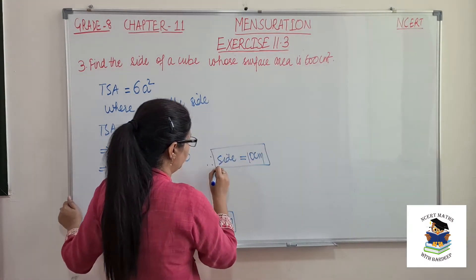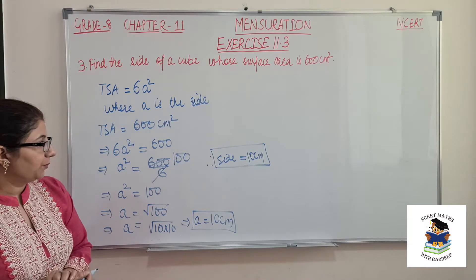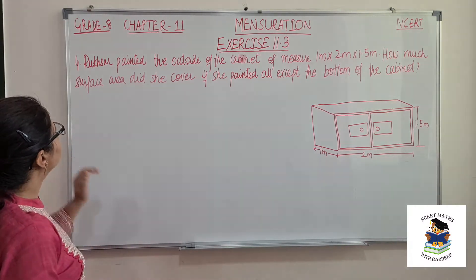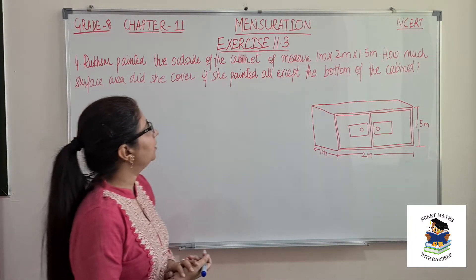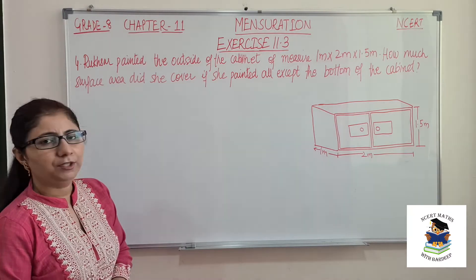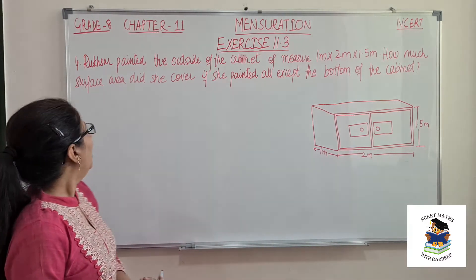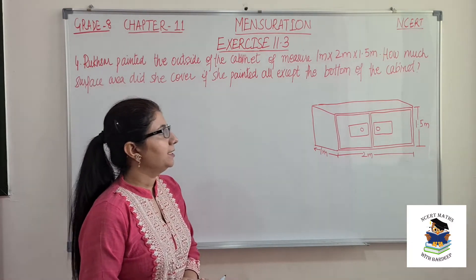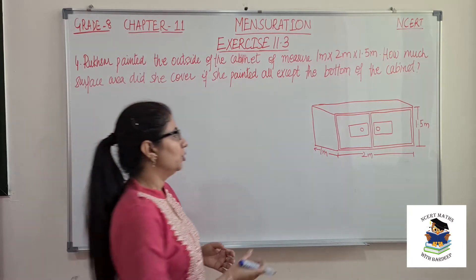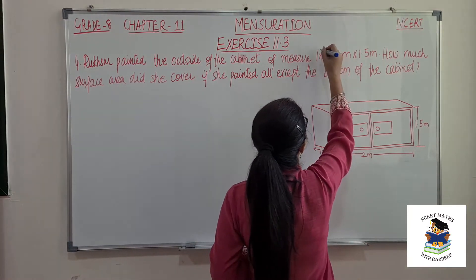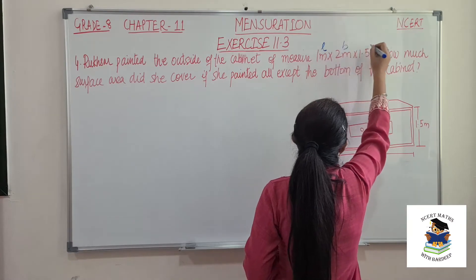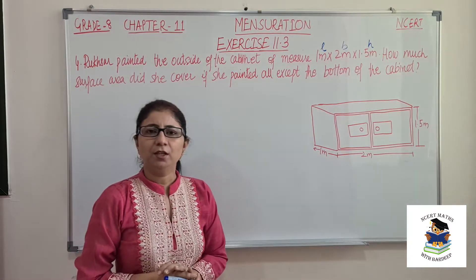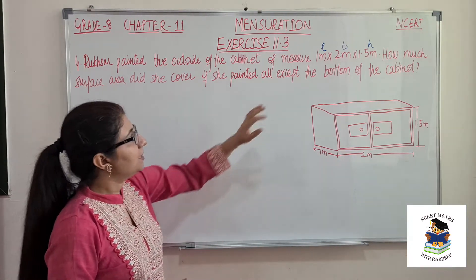So the side is equal to 10 cm. This is a very simple question. Now let's move on to the fourth question. Rukhswar painted the outside of a cabinet of measure 1 meter by 2 meter by 1.5 meter. How much surface area did she cover if she painted all except the bottom? So length is 1 meter, width is 2 meters, and height is 1.5 meter.